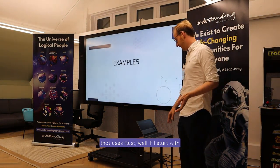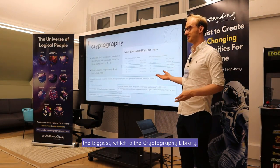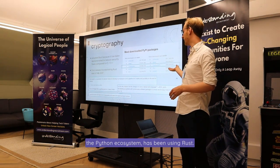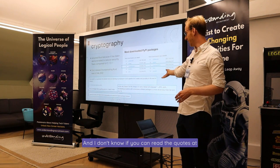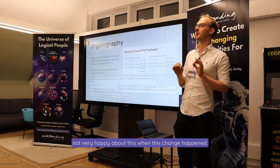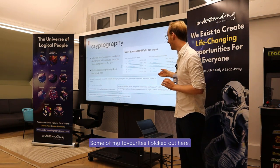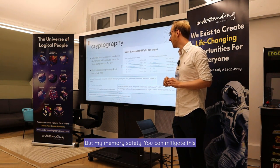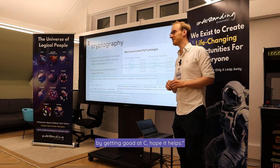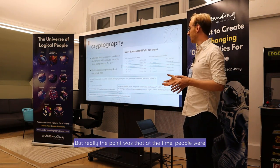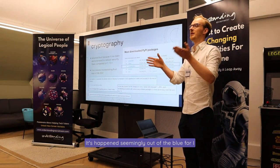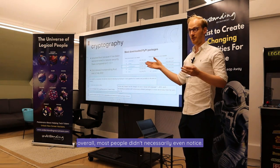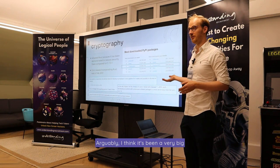More examples of Python software that uses Rust. I'll start with the biggest, which is the cryptography library. Since February 2021, cryptography — the 11th most downloaded library in the Python ecosystem — has been using Rust. There were quite a few people who were not very happy about this when the change happened. Some quotes: someone wanted to congratulate the heroes for blocking their employer's CI/CD pipeline for two weeks. But overall, most people didn't even notice — for many, it just continued to go on smoothly. Arguably, it's been a very big success.